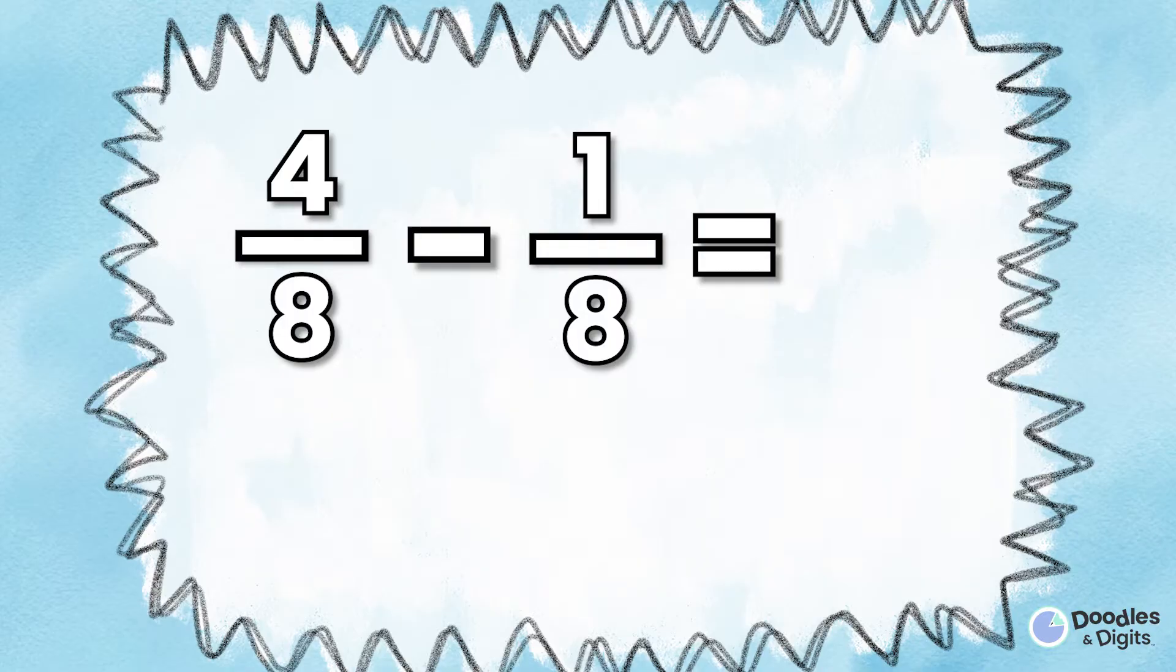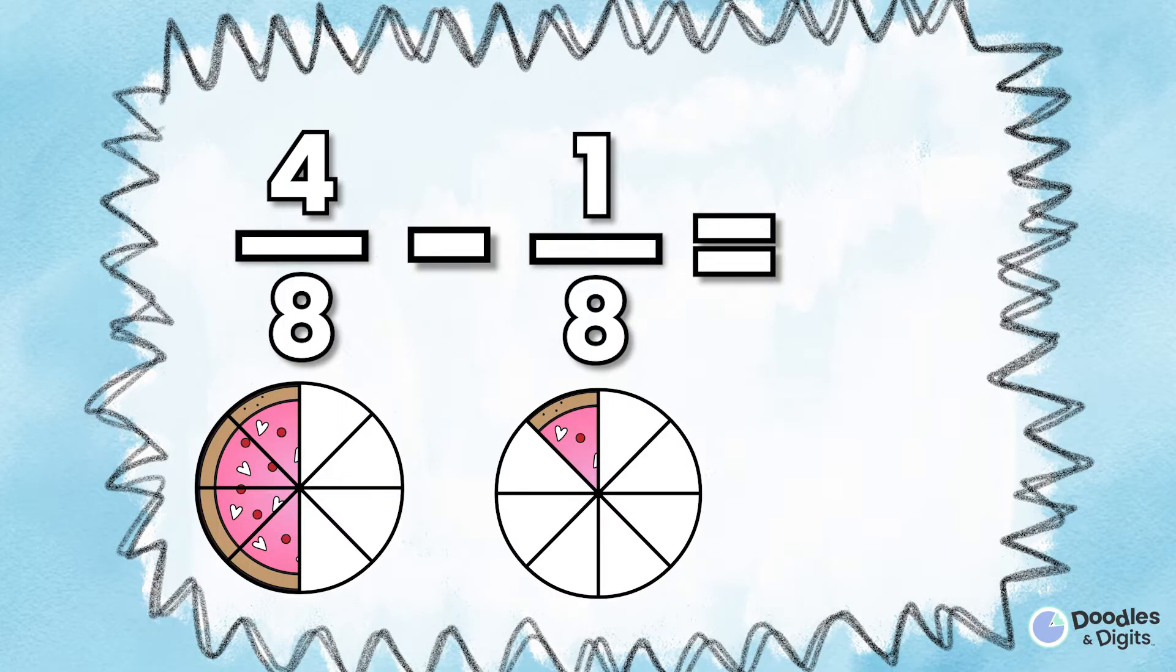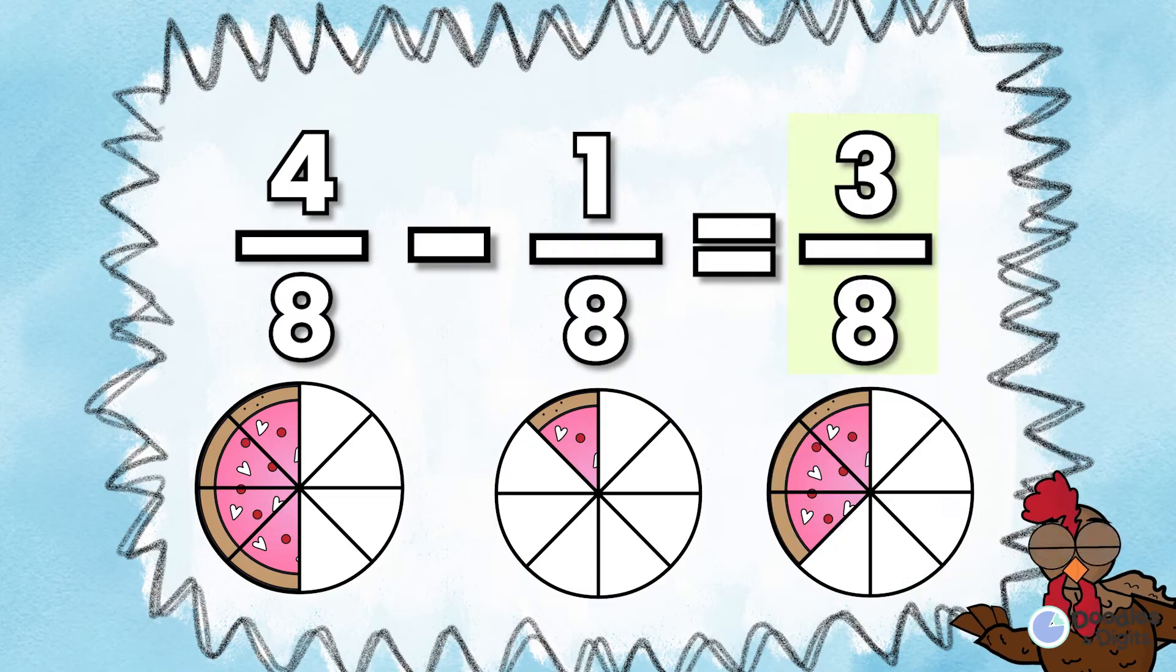Four eighths minus one eighth. Four eighths minus one eighth equals three eighths.